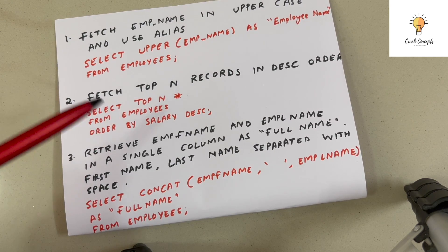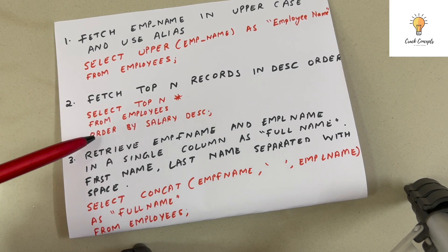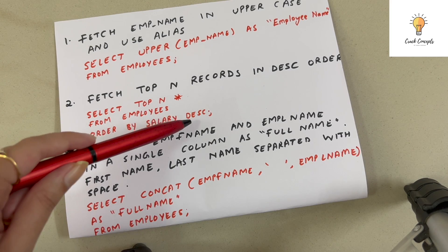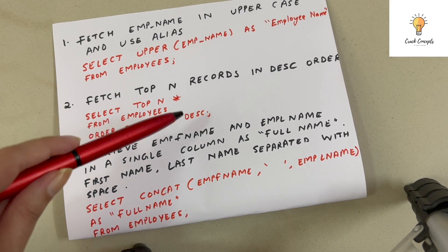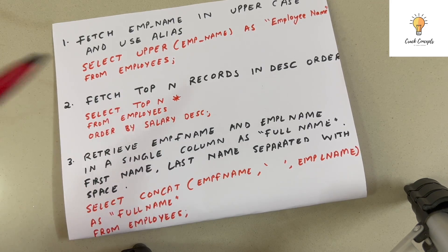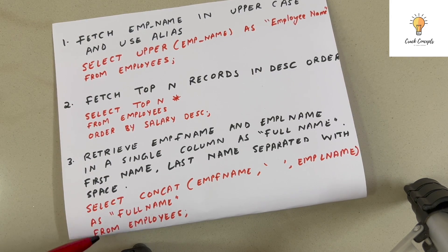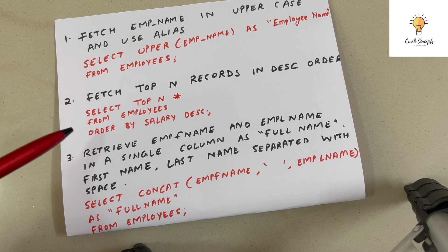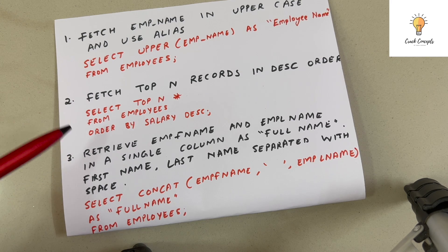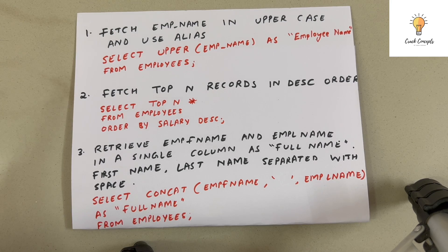...ORDER BY salary. Whenever we want to order our output we use ORDER BY. So: ORDER BY salary DESC. If we do not mention anything, it will be ascending order by default. Since we want descending order, we write ORDER BY salary DESC.